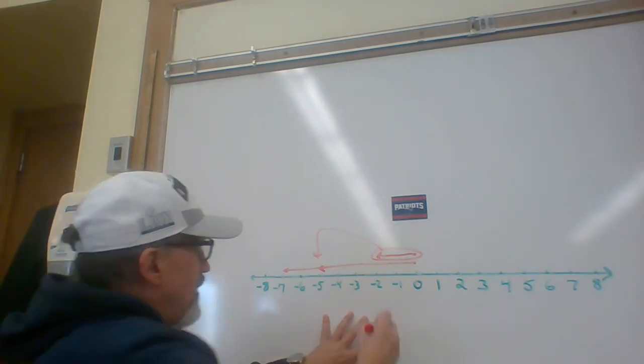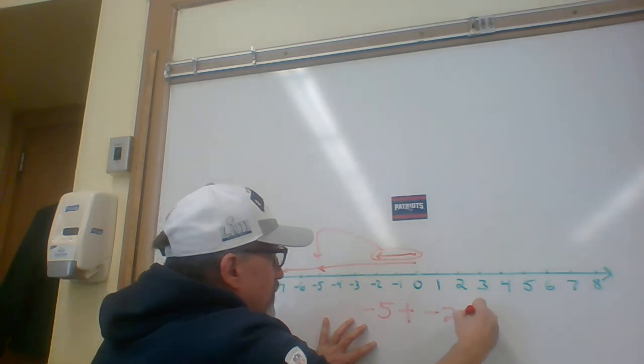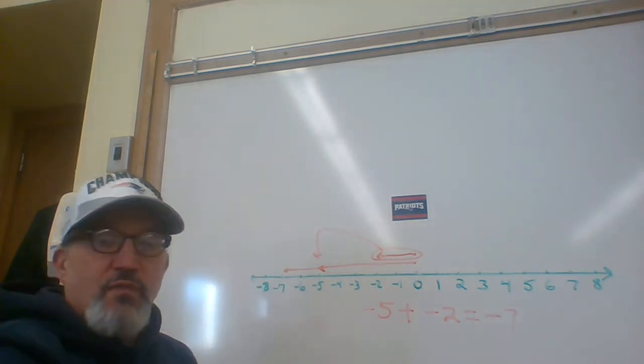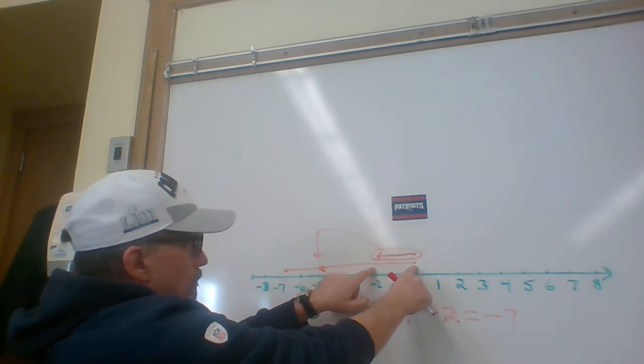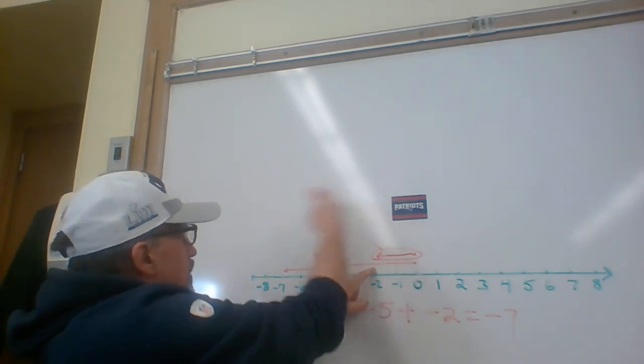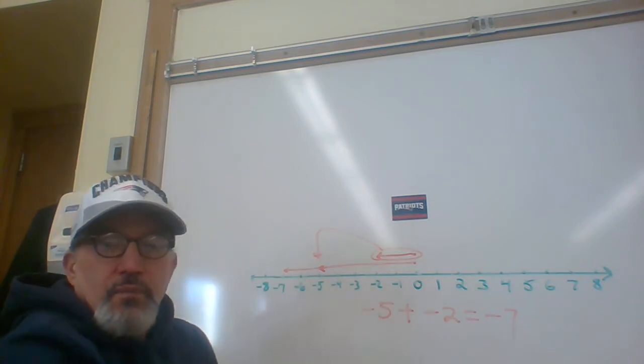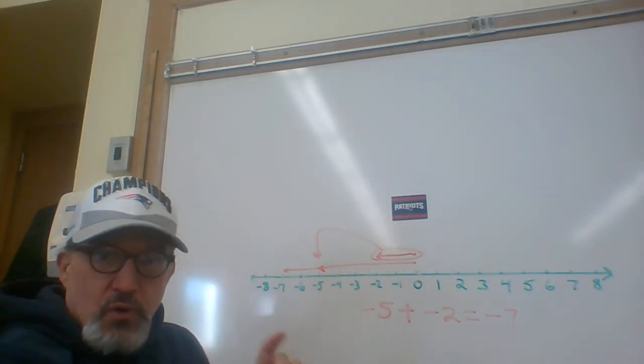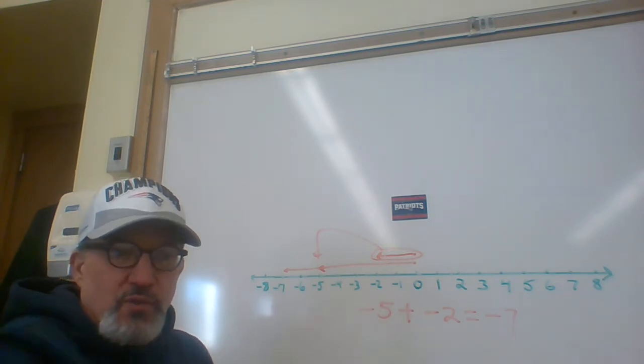Its endpoint of course will be at negative 7. What we just demonstrated is negative 5 plus negative 2 equals negative 7. Once again if we had started with the negative 2 vector and then put the negative 5 vector next to it we would still get to negative 7. Notice how these two numbers add in a similar way to the two positives.